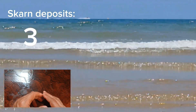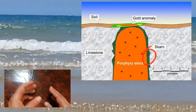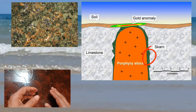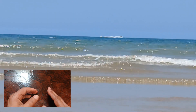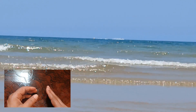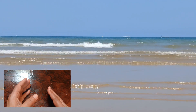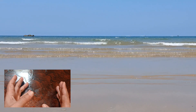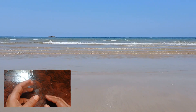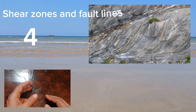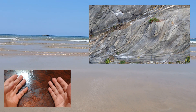Skarn deposits: skarns are rocks that form as a result of contact metamorphism between hydrothermal fluids and carbonate-rich rocks. Gold can be deposited within skarns as a result of these geological processes.